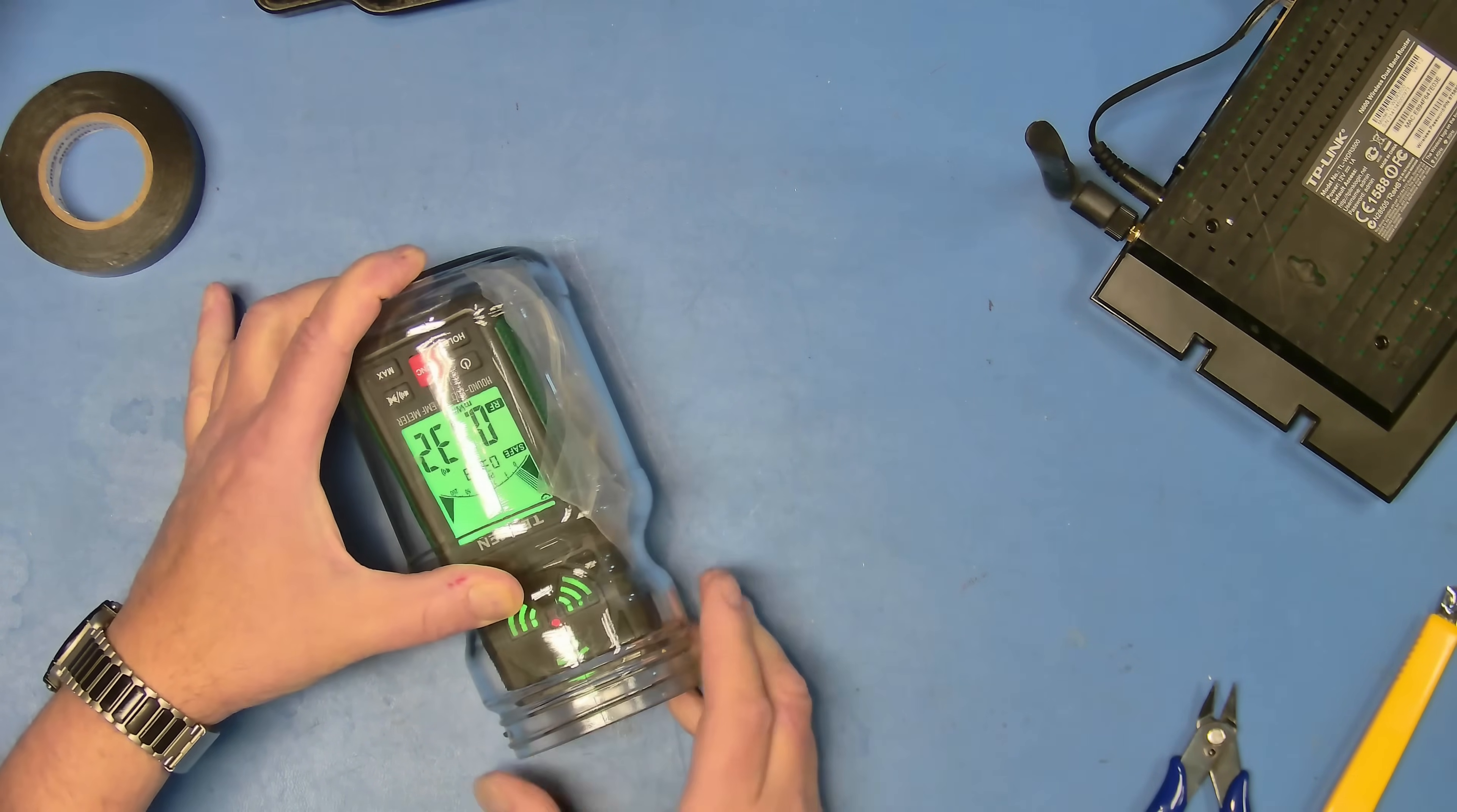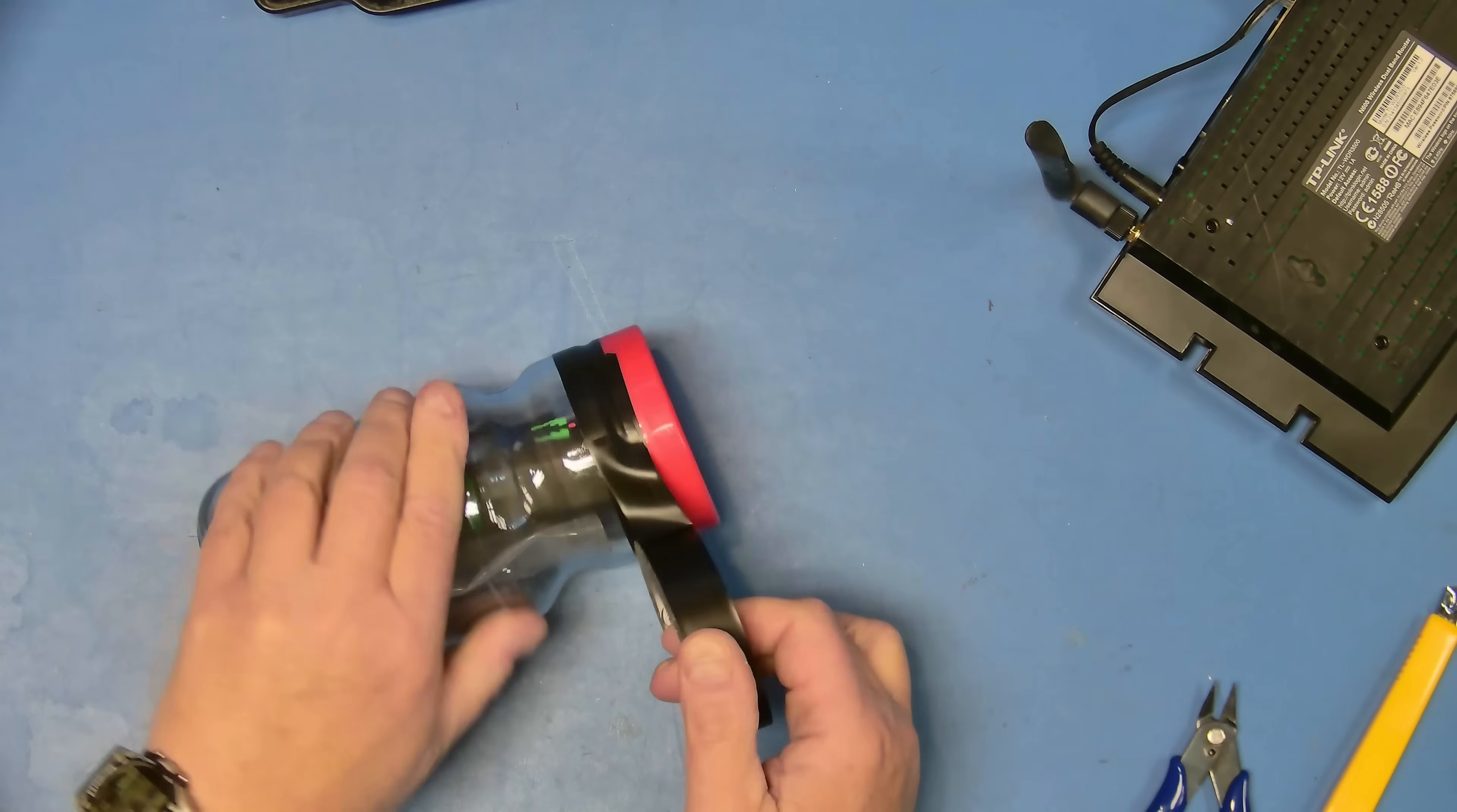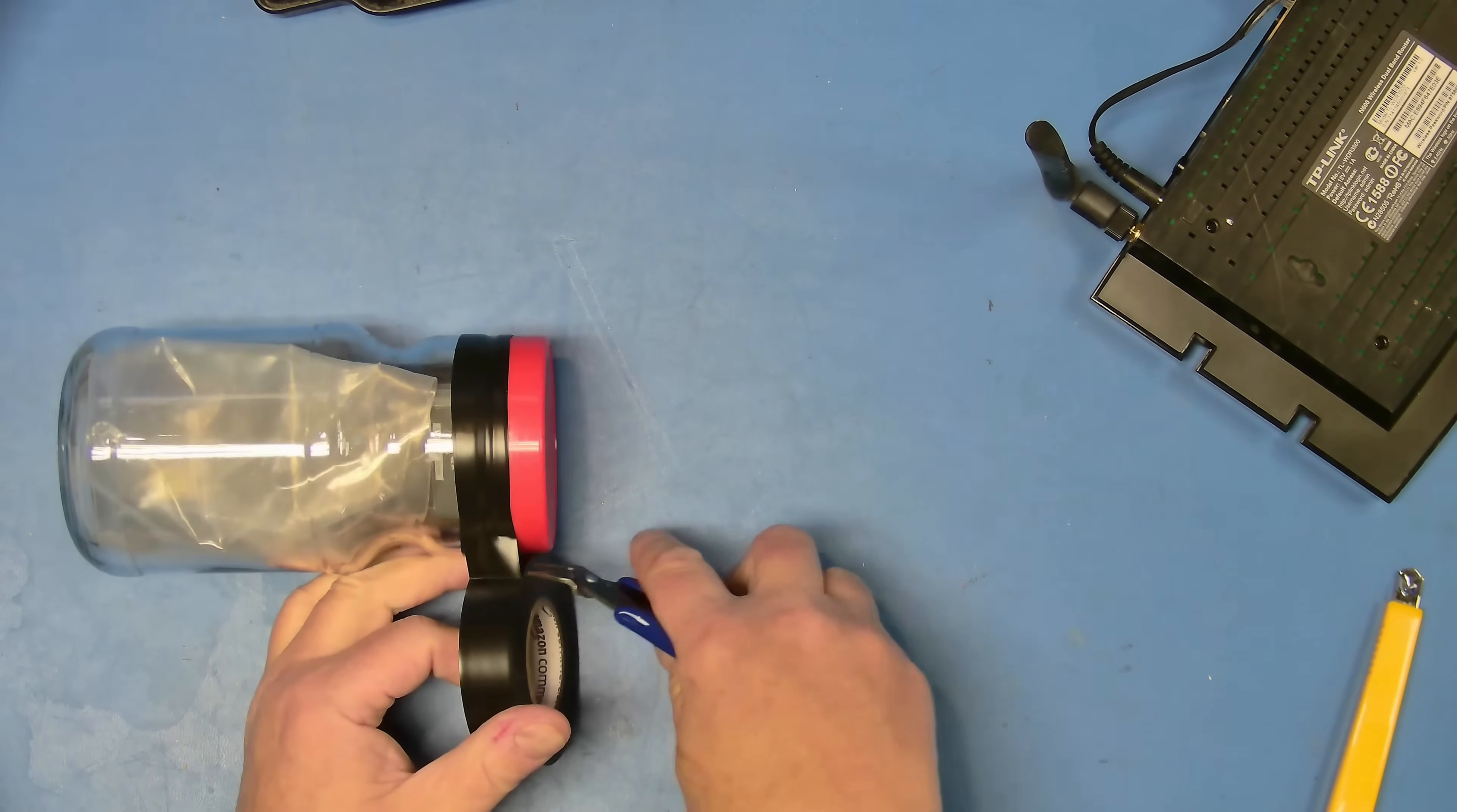I also don't trust the seal on the lid, so I used electrical tape to make sure water didn't get through any possible cracks. I wanted to use Wi-Fi for this demo, but I found that the signal strength from the router wasn't sufficient to penetrate distilled water at 2.4 GHz.